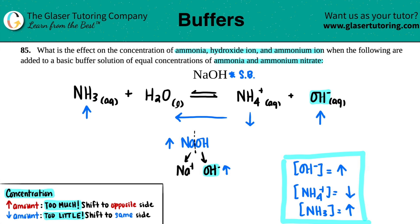And there are all of your effects. You have a little increase in hydroxide, and then that causes a decrease in ammonium ion and an increase in ammonia. Hopefully this helped — let me know in the comments. Thank you so much for viewing the video. I think there's one more part in this question, so hang tight if you're on the playlist. Keep studying hard, and I'll see you in a little bit.